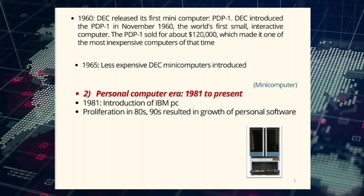In 1960, DEC released its first minicomputer, the PDP-1. DEC introduced the PDP-1 in November 1960 — the world's first small interactive computer. The PDP-1 sold for about $120,000, which made it one of the most inexpensive computers of that time. In 1965, even less expensive DEC minicomputers were introduced.